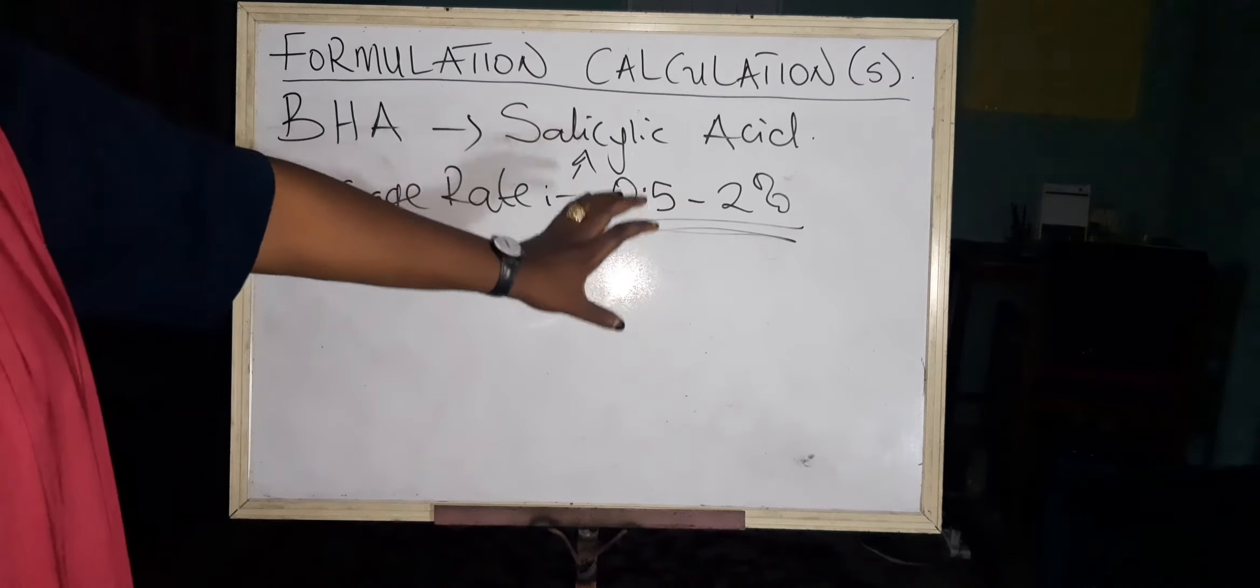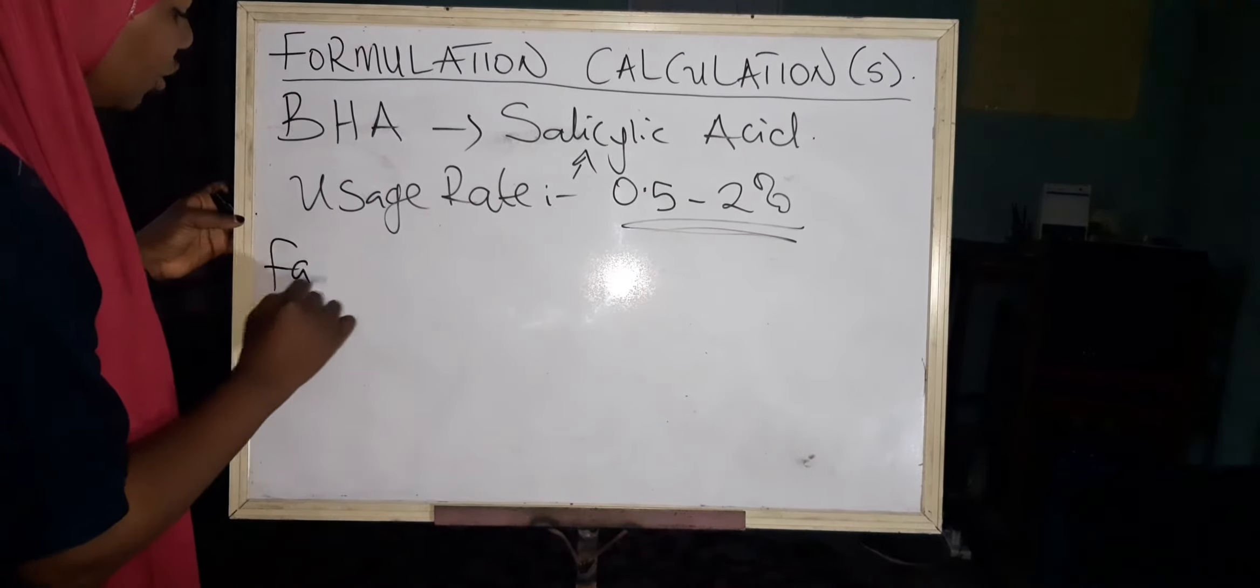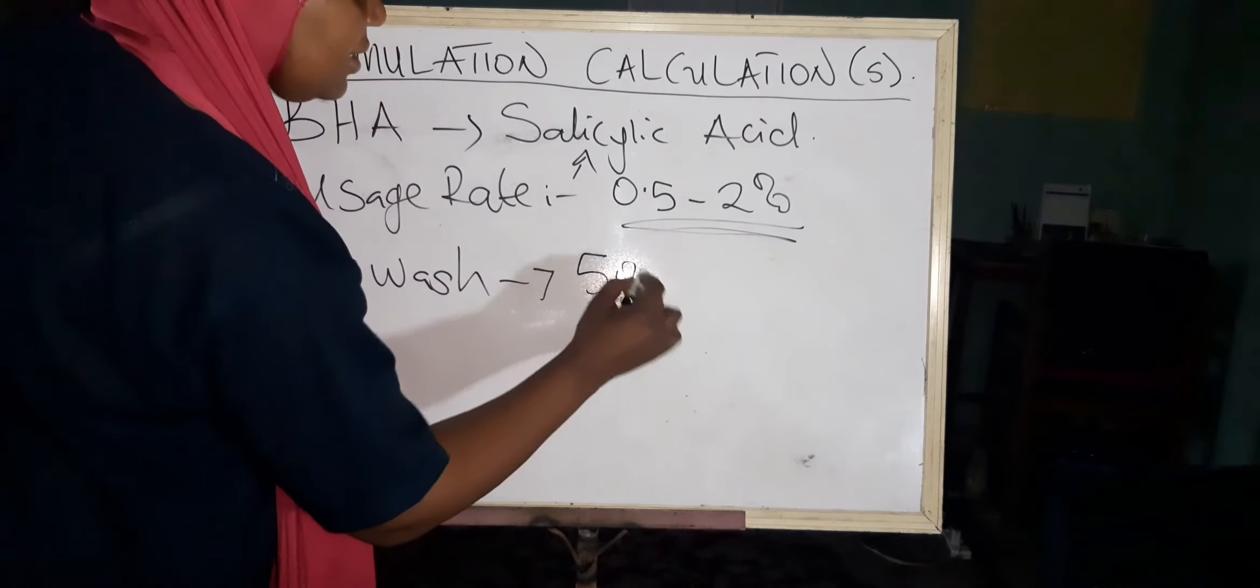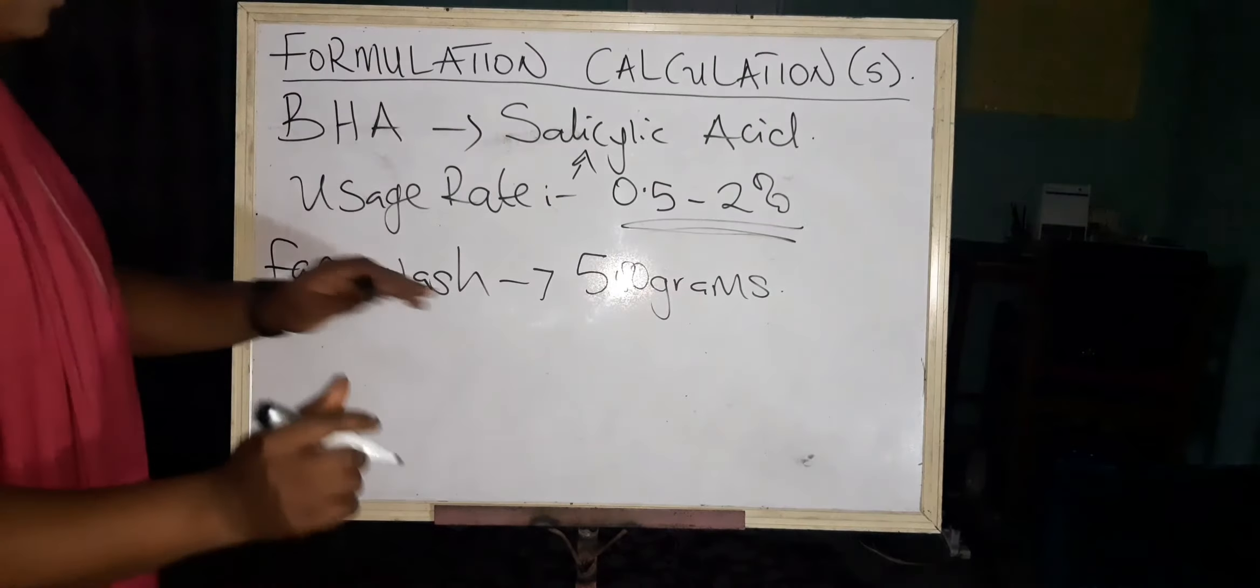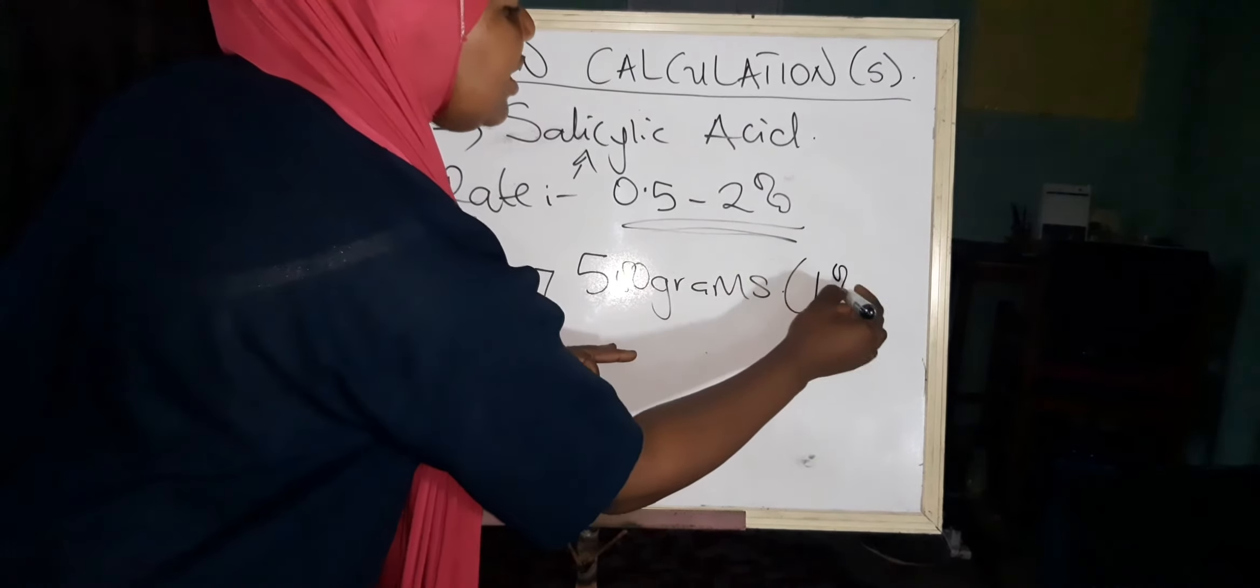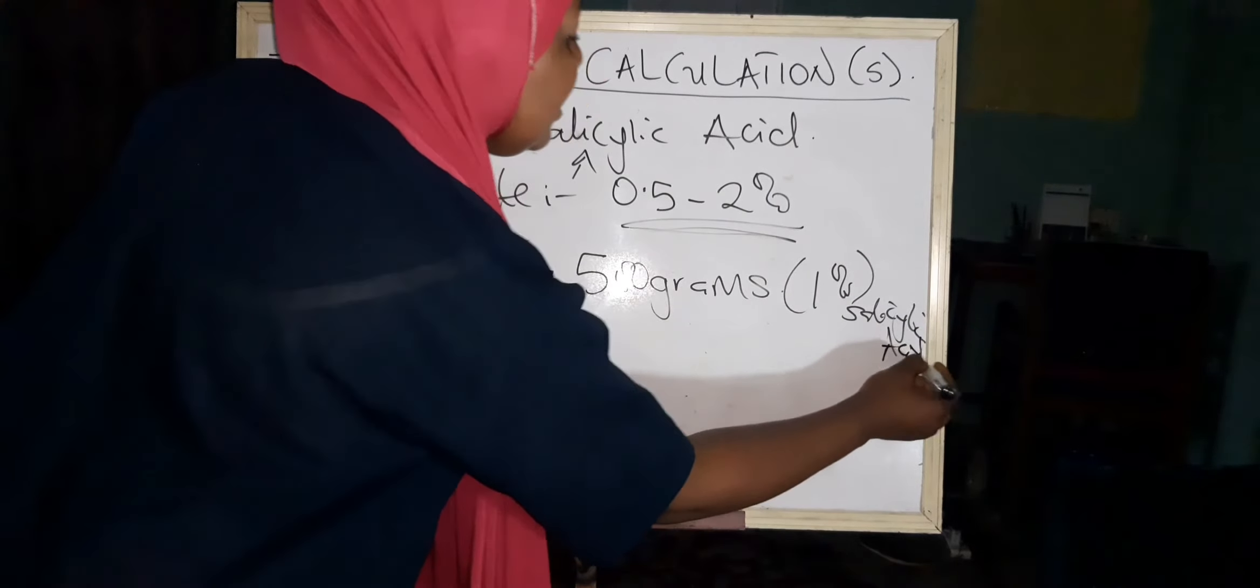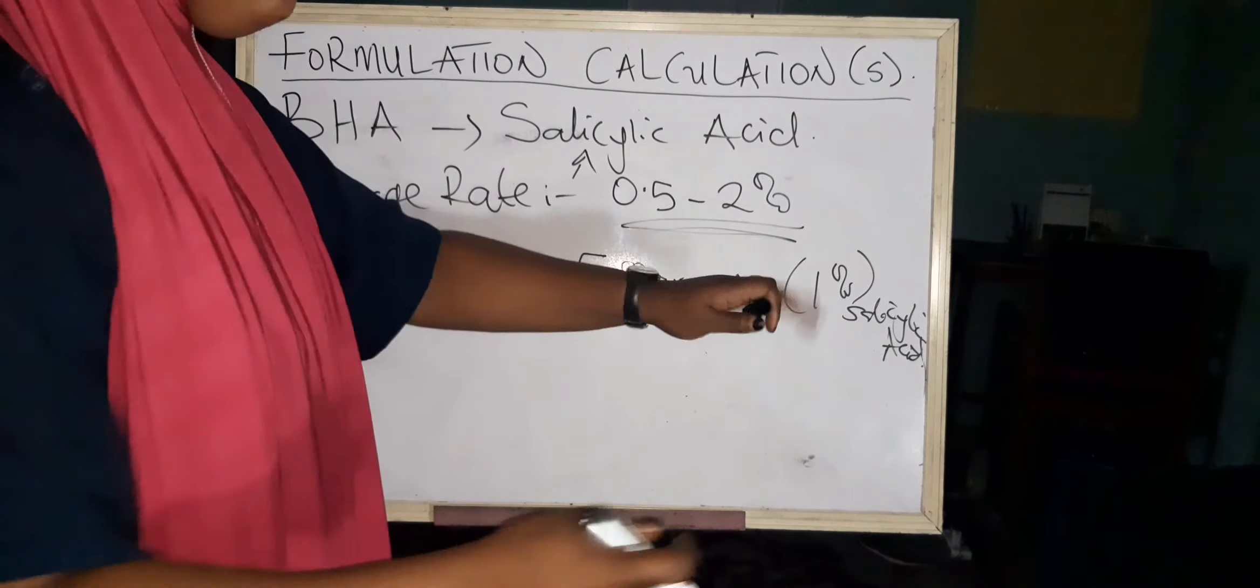Let's say we have a face wash of about 500 grams, and in this 500 grams face wash we want to work with just one percent of salicylic acid. How are we going to get the accurate weight of salicylic acid that will be used in the 500 grams face wash?